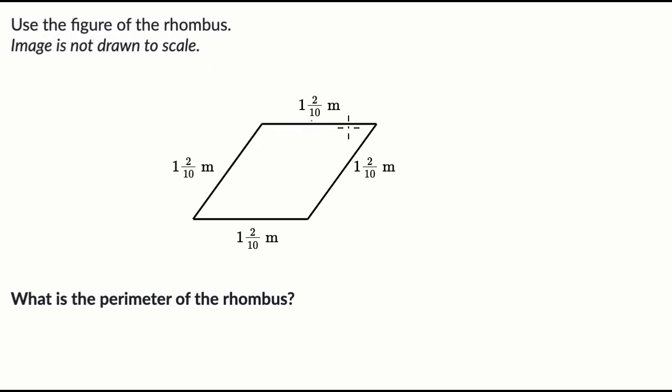We are told, use the figure of the rhombus. Here we have this rhombus here, which is just a quadrilateral, something with four sides, where all the lengths of the four sides are the same. And we can see that they are all one and two tenths meters.